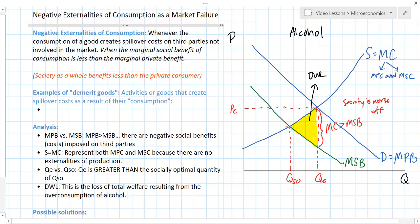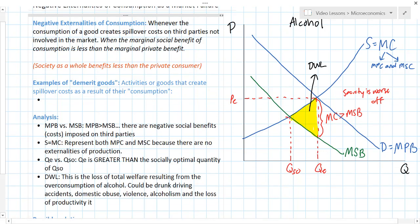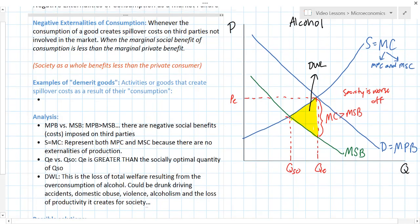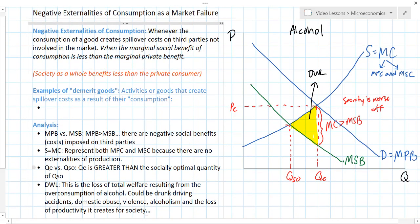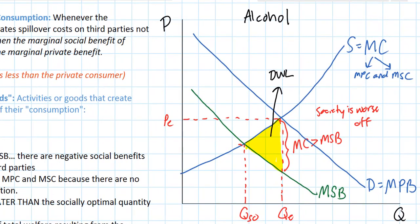What are some actual costs that alcohol consumption imposes on society? These could include drunk driving accidents, domestic abuse, violence, alcoholism, and the loss of productivity. There may be other imaginable externalities of alcohol consumption — these are just a few. Either way, we've got too much alcohol being consumed by the free market. Society would be better off if less alcohol was consumed and the price of alcohol were actually higher. Our socially optimal price is the price that corresponds with the socially optimal quantity.